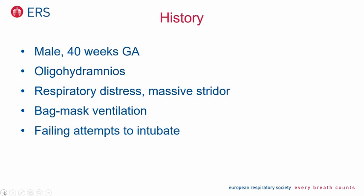So, this was a male newborn, 40 weeks of gestational age. There were oligohydramnios in pregnancy, and the baby was born and immediately developed respiratory distress with massive stridor — biphasic stridor, so inspiratory and expiratory. The junior neonatologist started bag-mask ventilation and tried to intubate the child, failed, called the senior neonatologist, and the senior neonatologist also failed to intubate the child. What would you think of such a case?